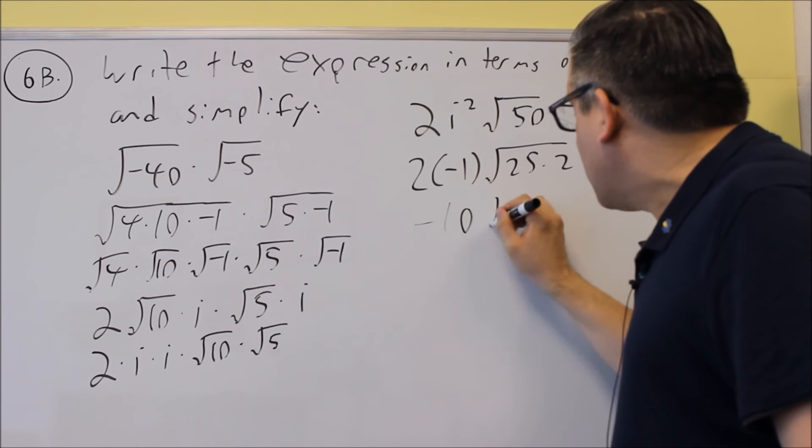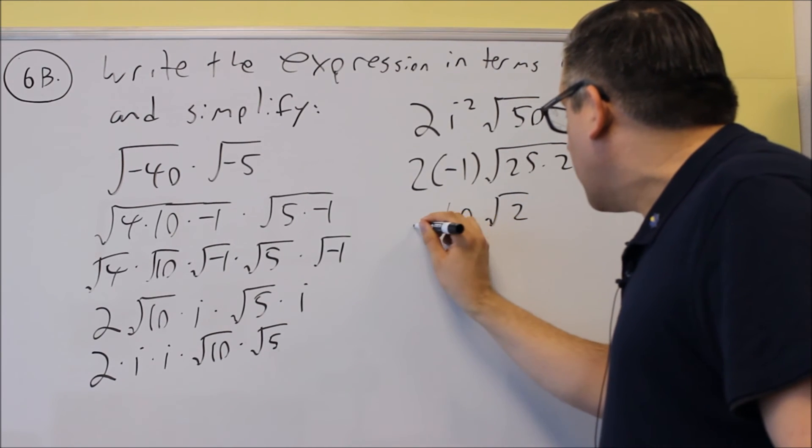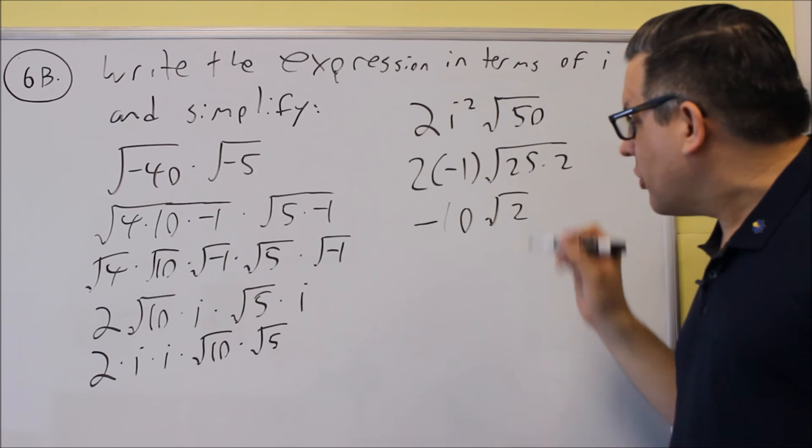So when the 5 comes out, you're going to get negative 10, and then you have square root of 2 on the outside. That would be your final answer.